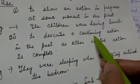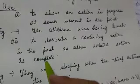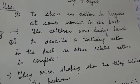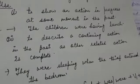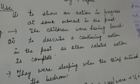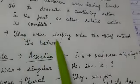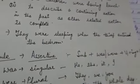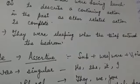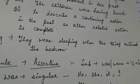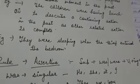Next is to describe a continuing action in the past as another related action is completed. Woh action jo hai woh complete ho chuka hota hai — jab hum dono cheezon ko relate karke batate hain jin mein se ek action complete ho chuka ho. For example, 'They were sleeping when the thief entered the bedroom.' Jab thief ne bedroom mein enter kiya, tab woh so rahe the.